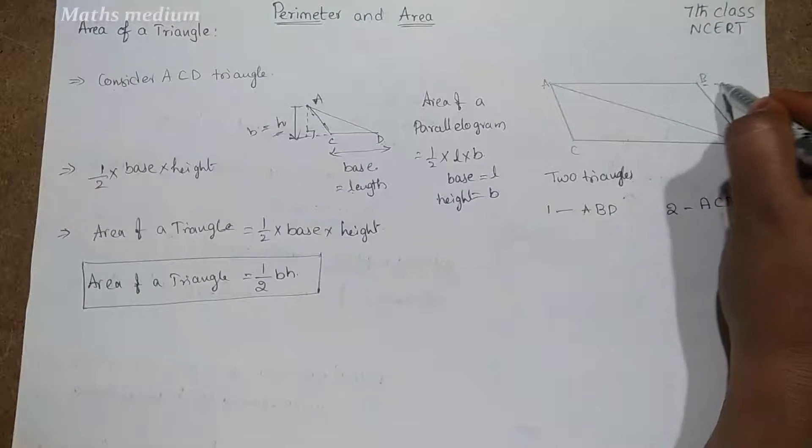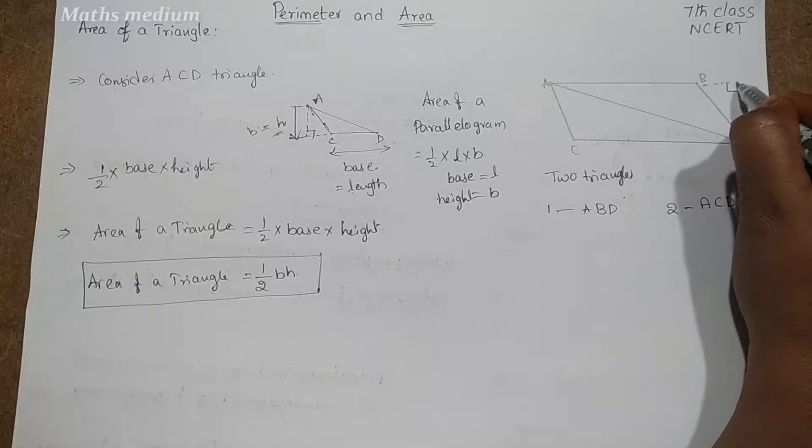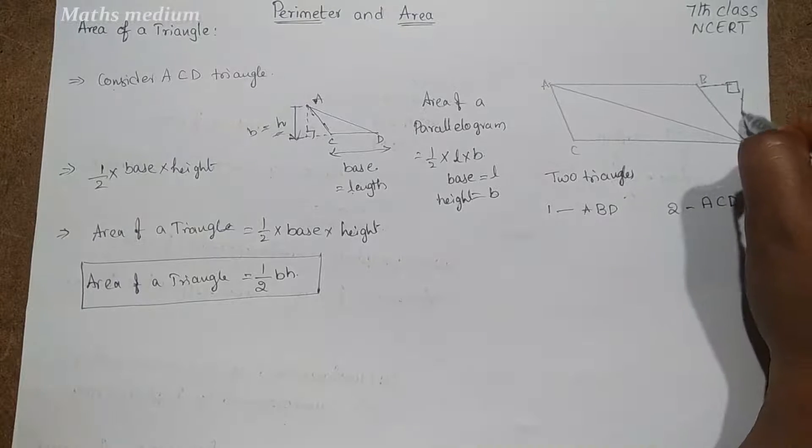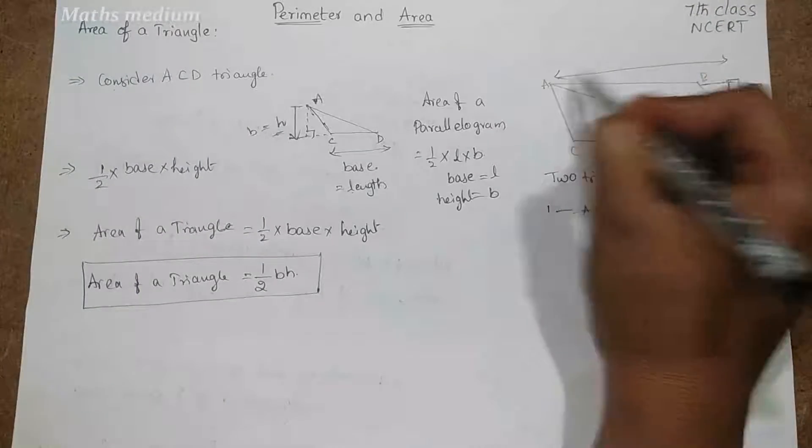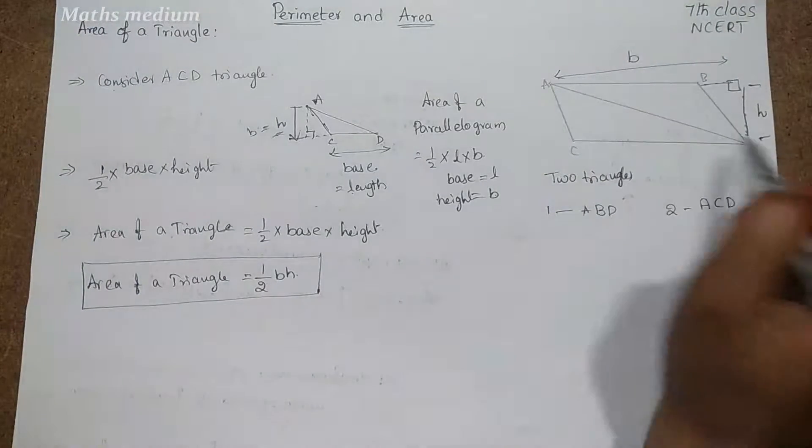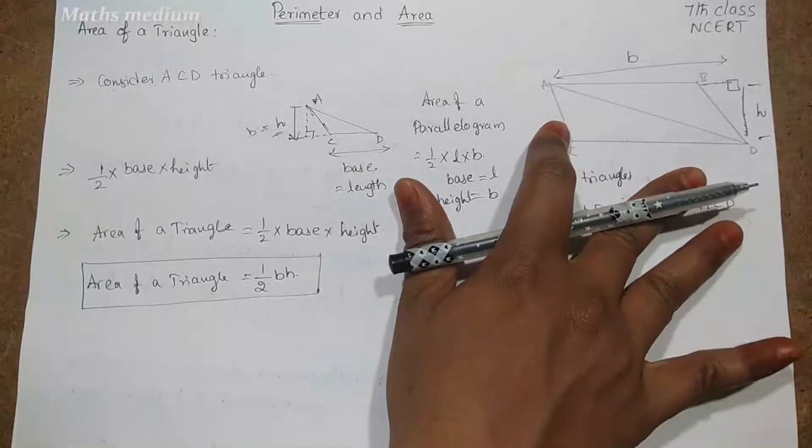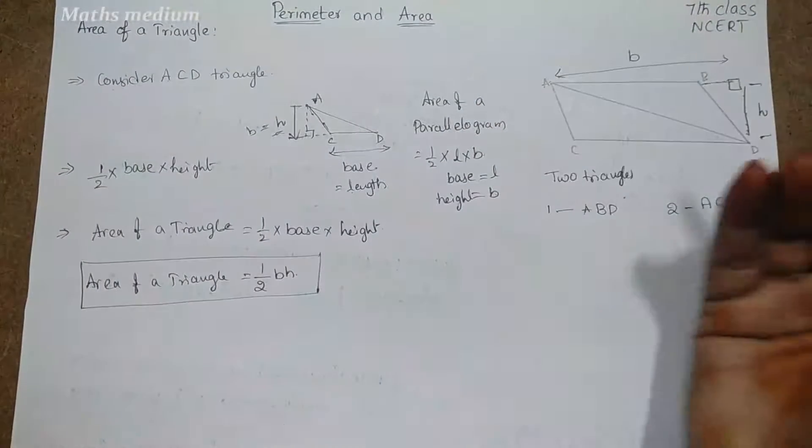ABD, here also we can prolong these lines. Here also we got perpendicular bisector to this. This we are considering as height and total this we are considering as B, that is base. So that is also half because of half of the parallelogram. So half into B into H.